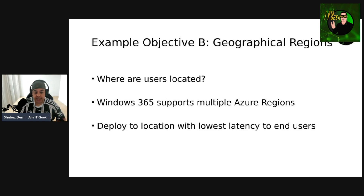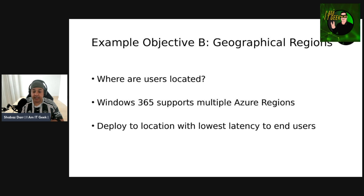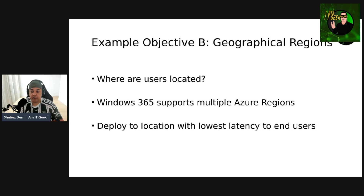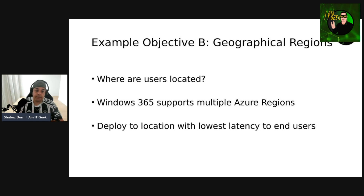For Objective B, you need to determine where your end users are physically located. Windows 365 can provide cloud PCs in multiple locations around the world, so you can provision cloud PCs in locations with low latency relative to your end users' physical location.